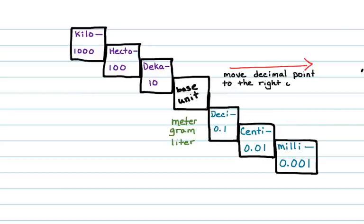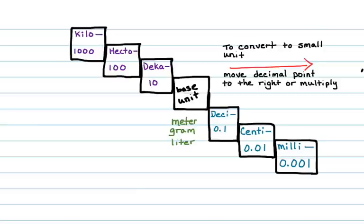The rule for conversion: if I go down the stairs, I'm converting to a smaller unit. Going from the base unit down the stairs to a smaller unit, I move the decimal point to the right, or multiply by the corresponding value. If I go up the stairs, I'm converting to a larger unit, and I move the decimal point to the left, or divide by the given unit.